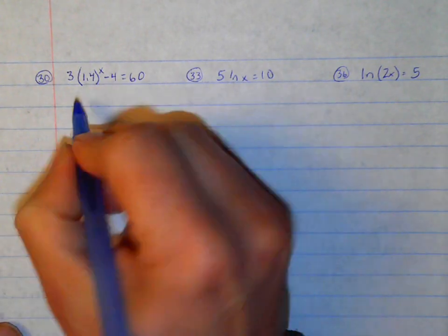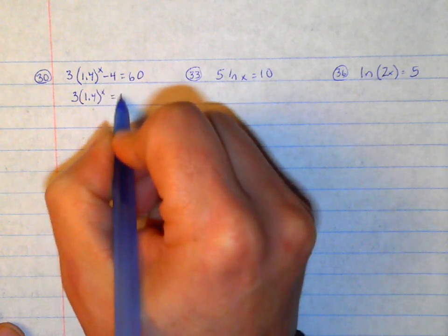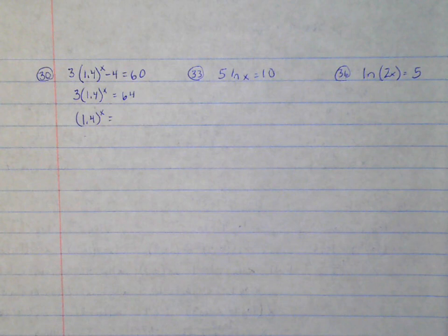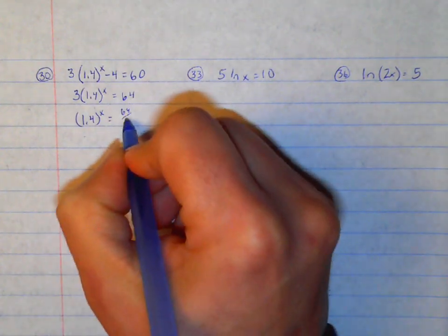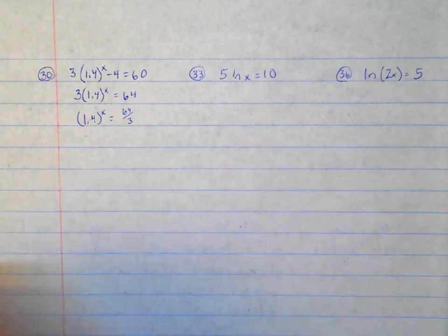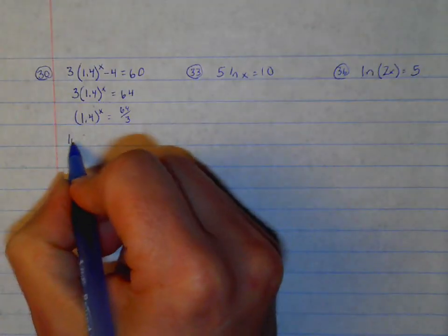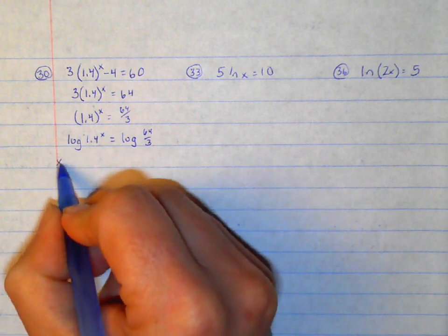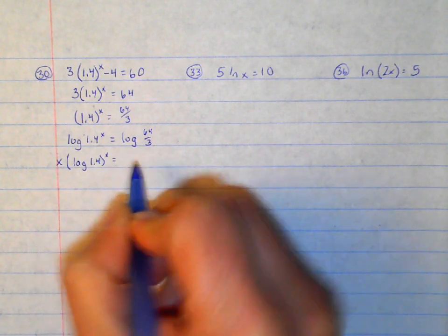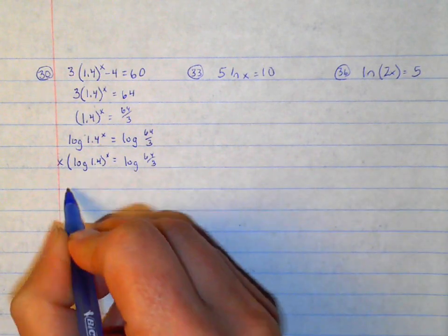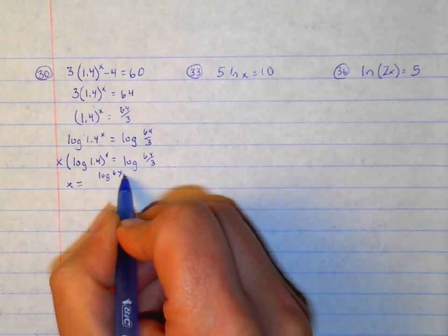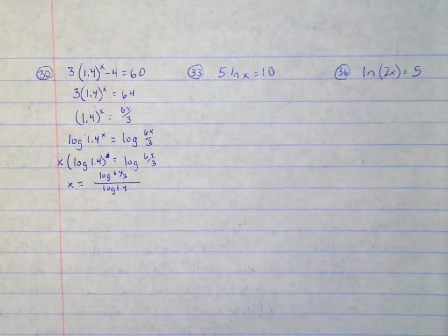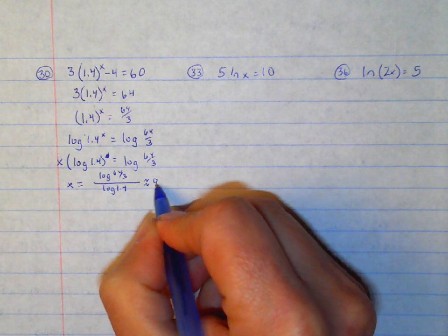Number 30: I'm going to add the 4 over, then divide by 3. This doesn't simplify — it would just be 64 thirds. Now with the exponent, I'm going to take the log of both sides and take the x out front using the exponent rule. Solving for x, I get x equals log of 64 thirds over log of 1.4, which works out to about 9.095.